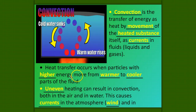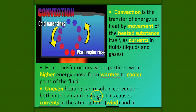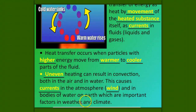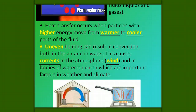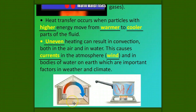Heat transfer occurs when particles with higher energy move from warmer to cooler parts of the fluid. Uneven heating can result in convection both in air and in water. This causes currents in the atmosphere like wind, and in bodies of water, which are important factors in weather and climate. The information you're learning about conduction, convection, and radiation is important not only in the energy unit but also in the upcoming weather unit.